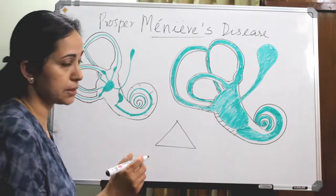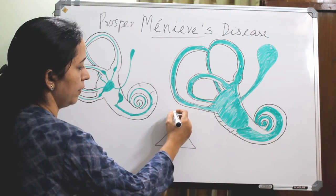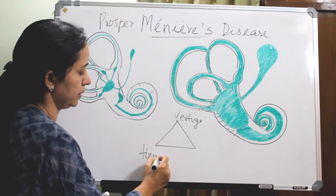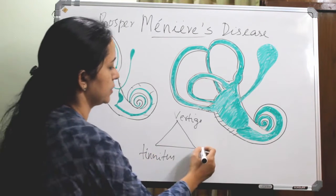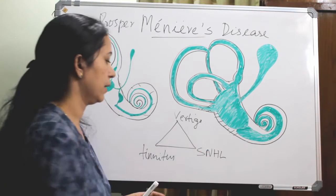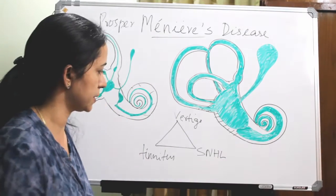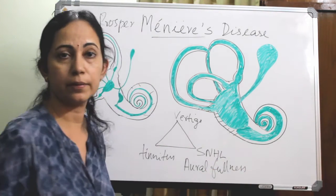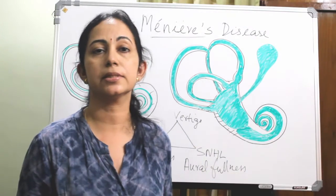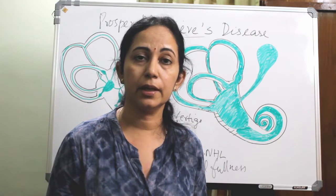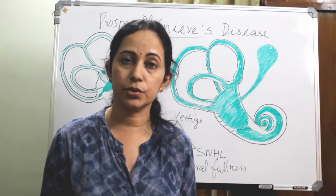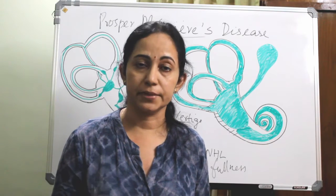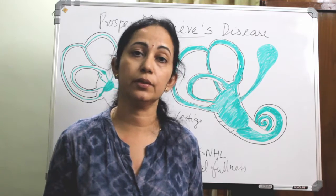The main symptoms form a triad: first, vertigo; second, tinnitus; and third, sensorineural hearing loss. This is the classical triad. Sometimes there is a fourth symptom, which is aural fullness. The symptom complex consists of vertigo, tinnitus, sensorineural hearing loss, and often associated with fullness of the ear.